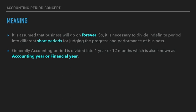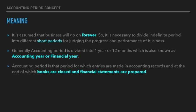Our accounting year starts on 1st April and ends on 31st March. Our calendar year starts on 1st January and ends on 31st December. Generally, our financial year starts on 1st April and ends on 31st March, and we follow this accounting period concept.